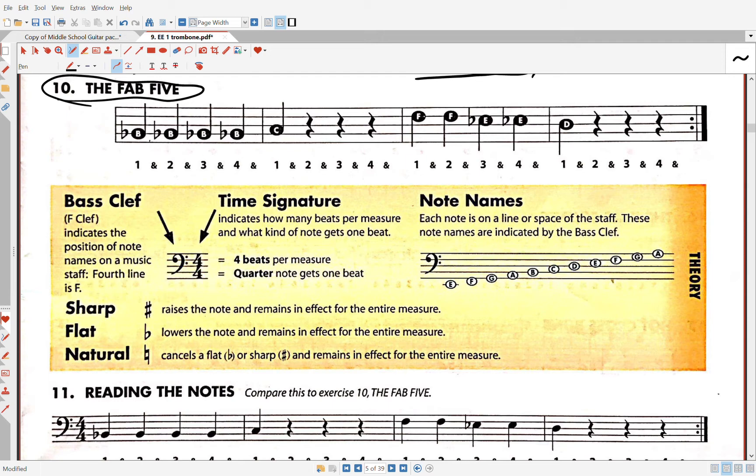Here's a C on the second space. Here's an F on the fourth line. Here's an F on the fourth line. E-flat on the third space, and a D on the third line.